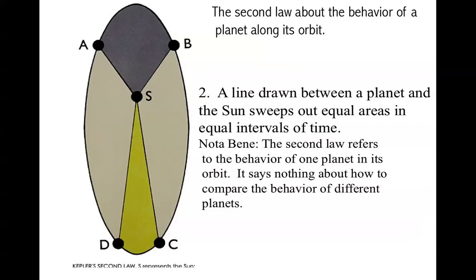So between points a and b, the planet has to move more quickly than it moves between c and d, so that the gray area equals the yellow area.